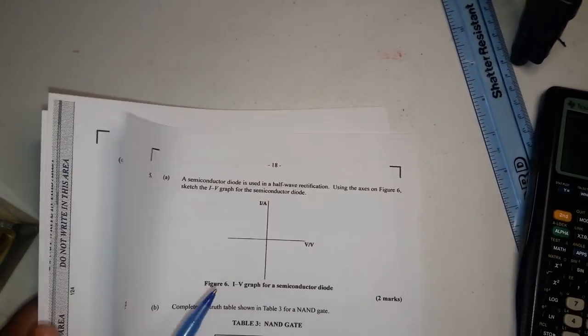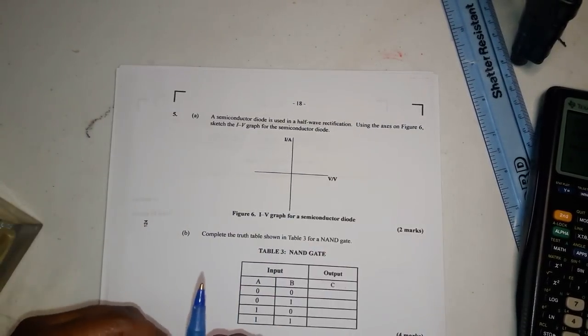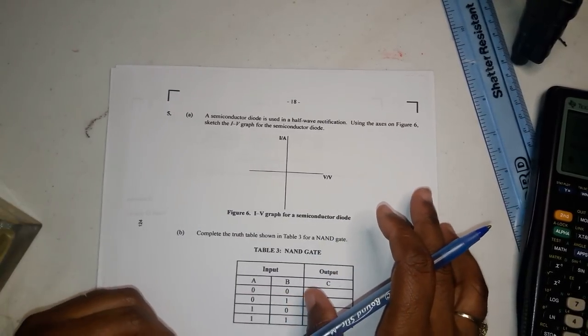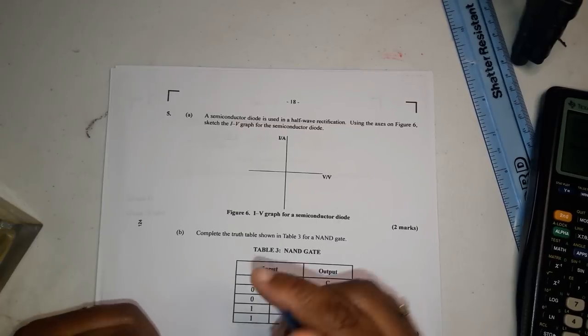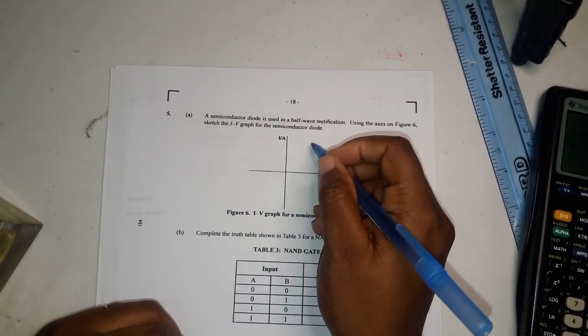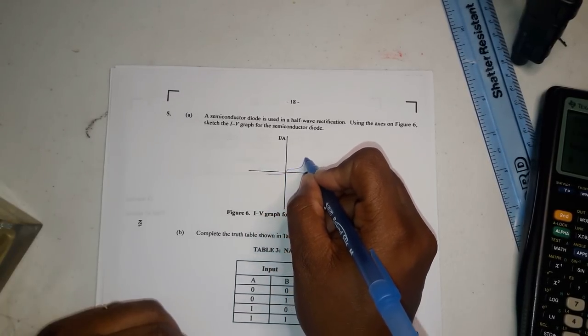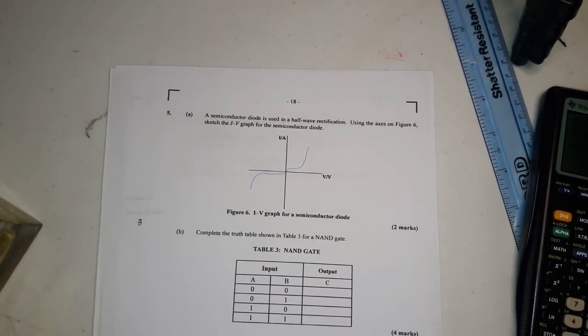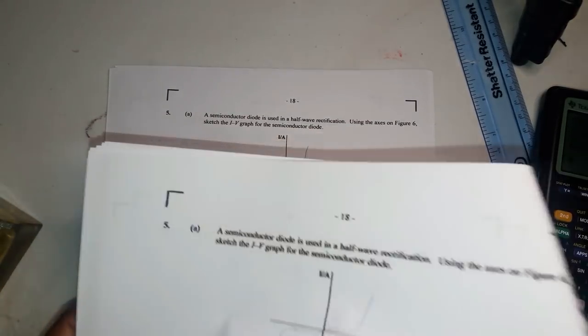Now moving on to question five. Question five says a semiconductor diode is used in a halfway rectification. Use the axis in figure six to sketch the IV graph for the semiconductor diode. So the semiconductor diode is a non-ohmic conductor so it produces it doesn't produce a straight line. It's like a chair.